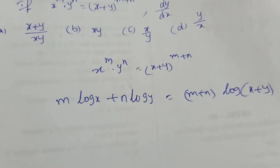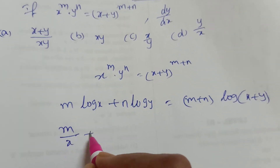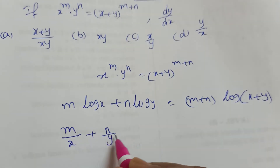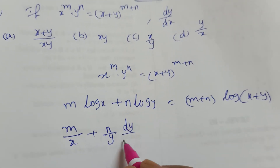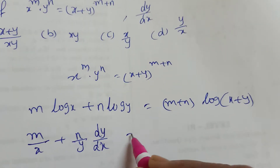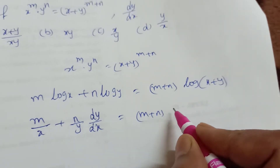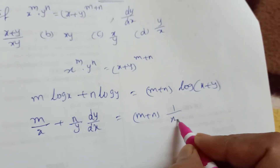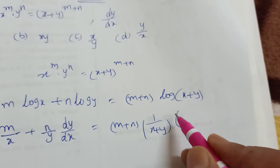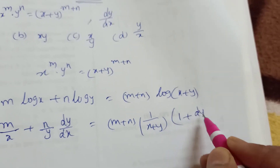Now we are doing the derivative. m log x gives 1 by x, plus n log y gives 1 by y into dy by dx — because y is there. Then that is dy by dx. Here, m plus n is constant times log of x plus y, so that gives 1 by x plus y into 1 plus dy by dx.